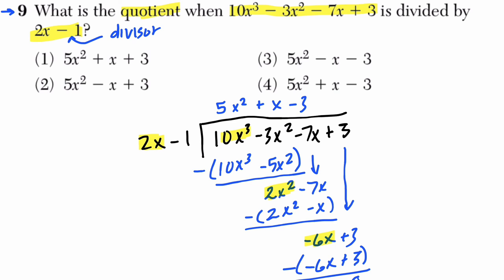So right here, this is our quotient: 5x² + x - 3. And you can see that that is right here in choice 4. I hope that helped.